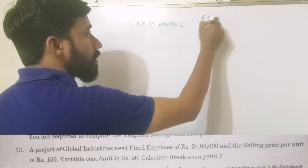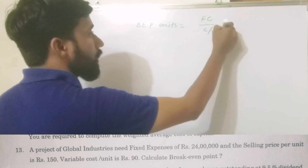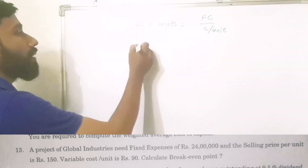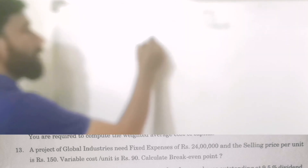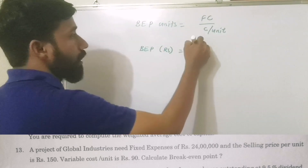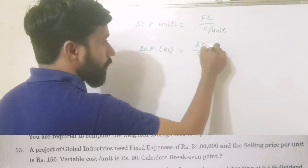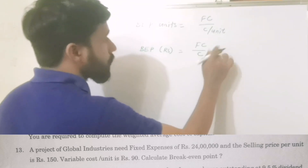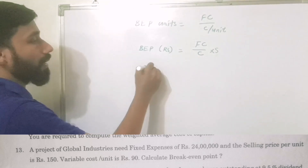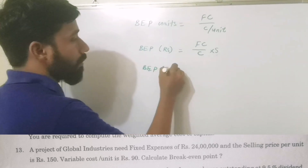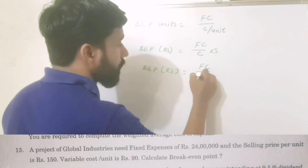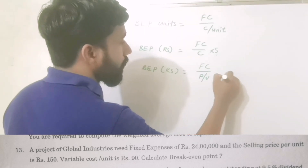To calculate the break-even point in units, it is fixed cost divided by contribution per unit. The second equation is fixed cost divided by PV ratio.